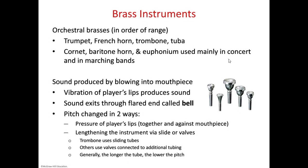Most brass instruments have that kind of valve system. The trombone is different — it has one long slide instead of valves, so the pitch is changed by extending that slide out. The trombone was my main instrument in high school and college; these days I mostly play guitar, bass, and drums. Trombonists have to use their ears and muscle memory to figure out exactly where the notes are supposed to go. Generally the longer the tube, the lower the pitch. Mouthpieces come in a variety of sizes based on the instrument — the tuba mouthpiece is the biggest, almost entirely covering your lips, whereas trumpet and French horn mouthpieces are very small.